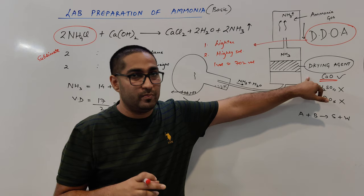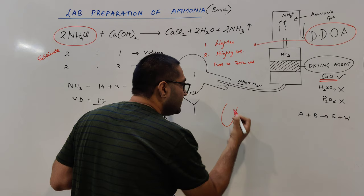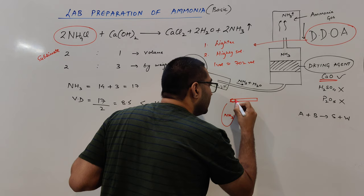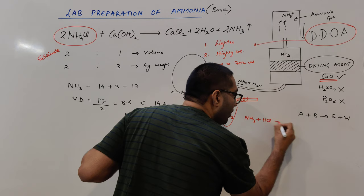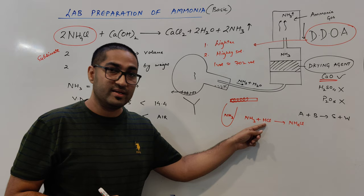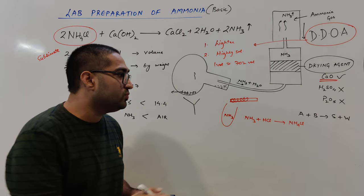To identify ammonia gas in a test tube, take a rod dipped in hydrochloric acid (HCl) and bring it near the mouth of the test tube containing ammonia gas. Ammonia will immediately react with HCl and produce dense white fumes of ammonium chloride (NH4Cl). The appearance of these dense white fumes confirms the presence of ammonia gas.